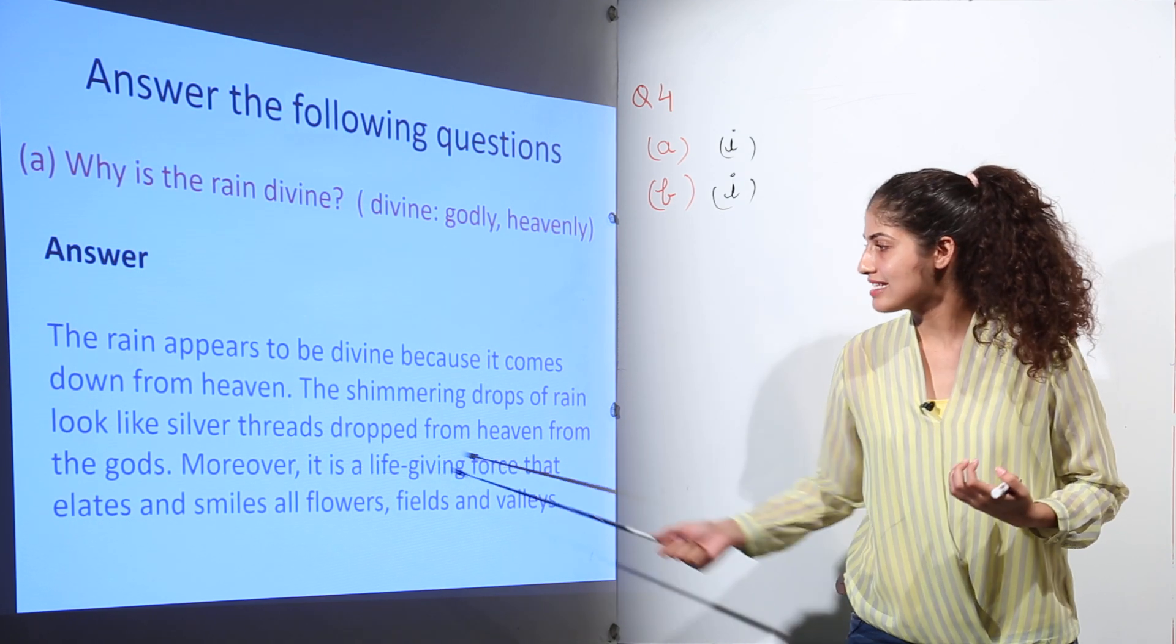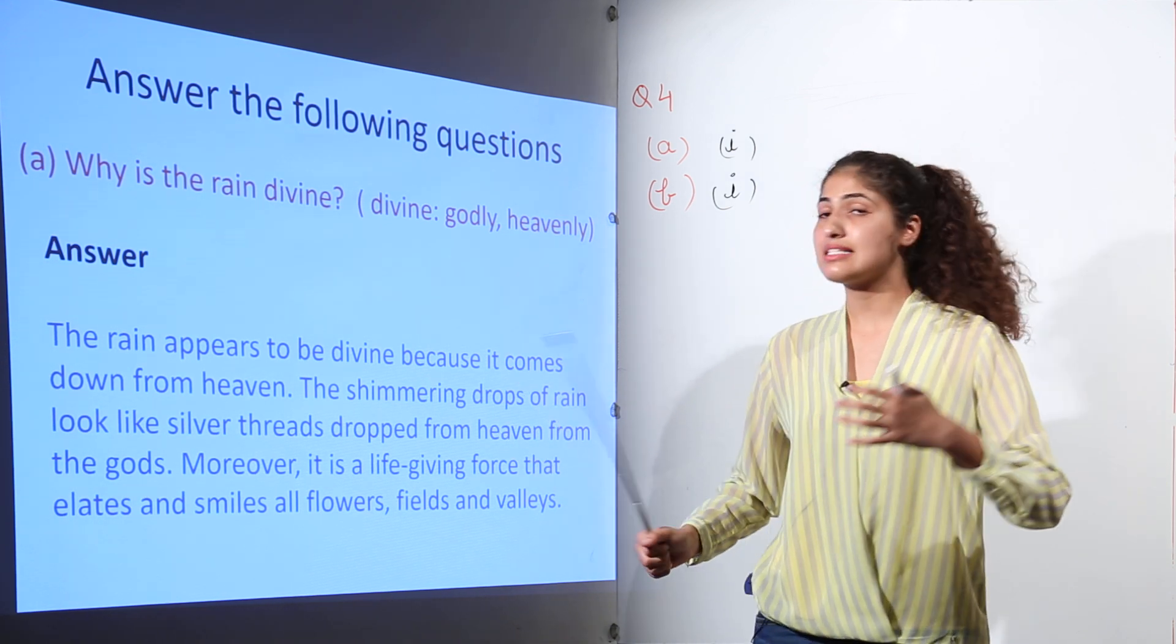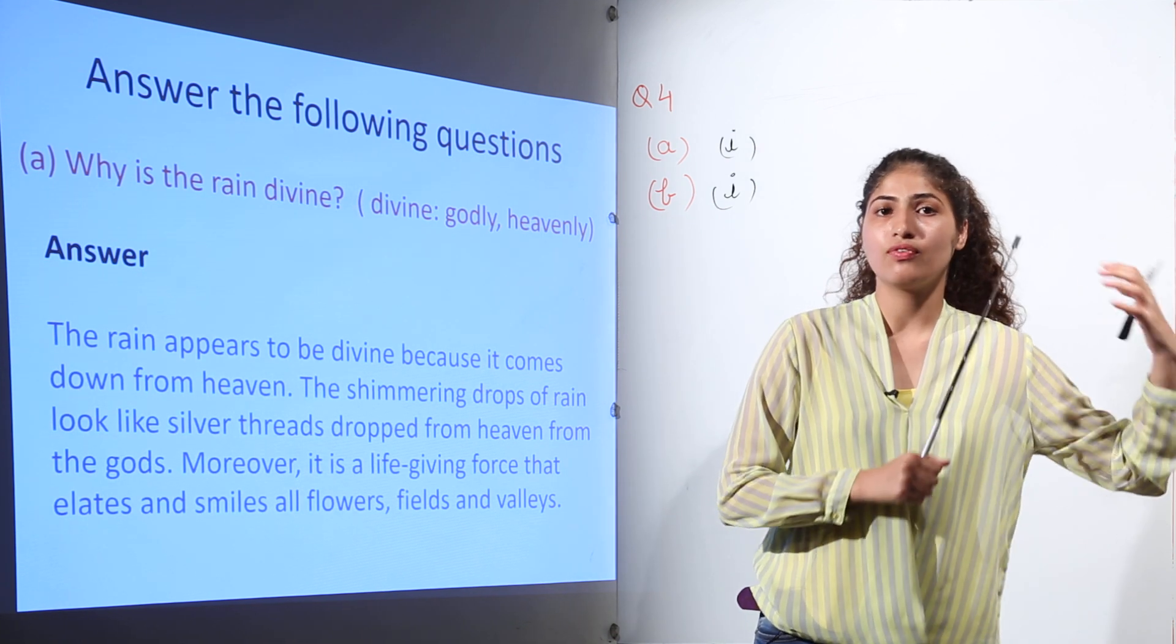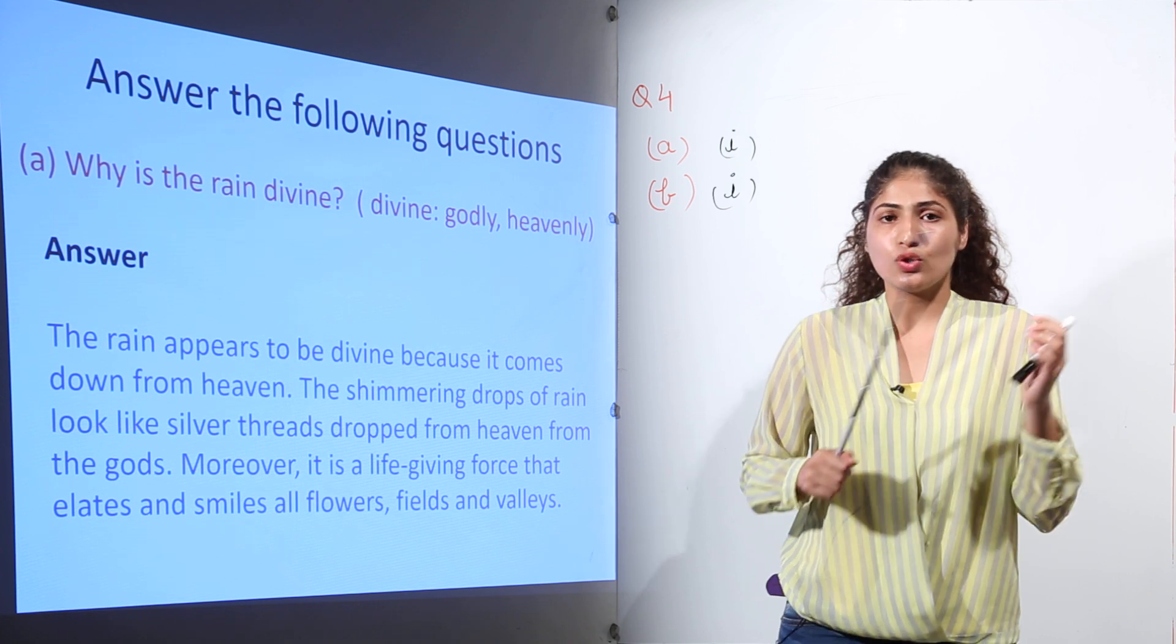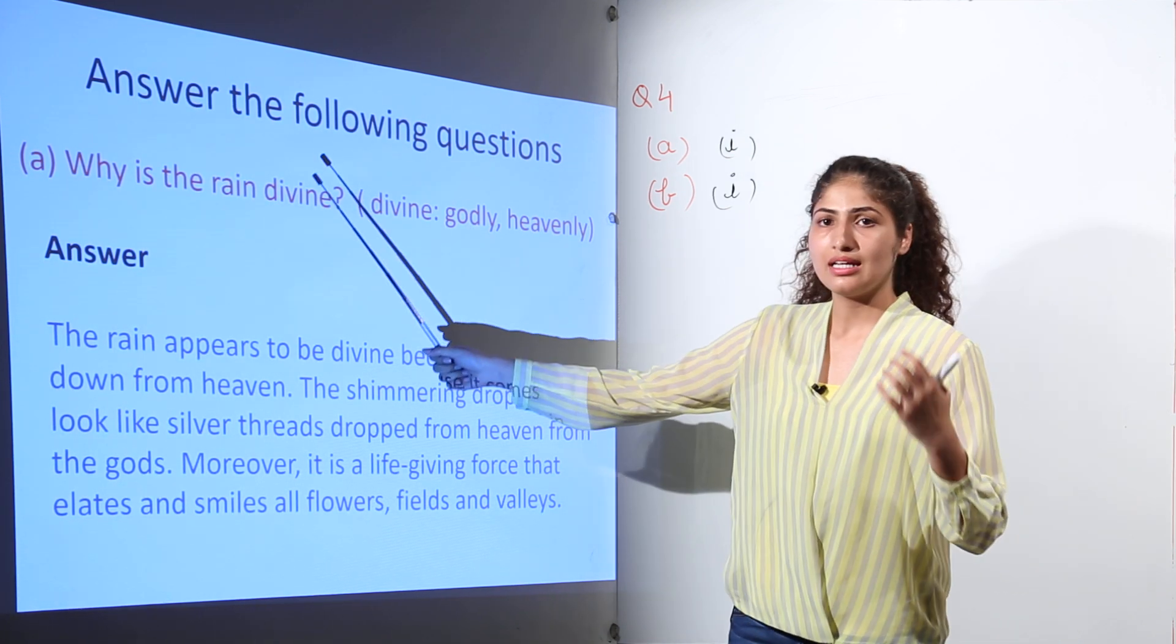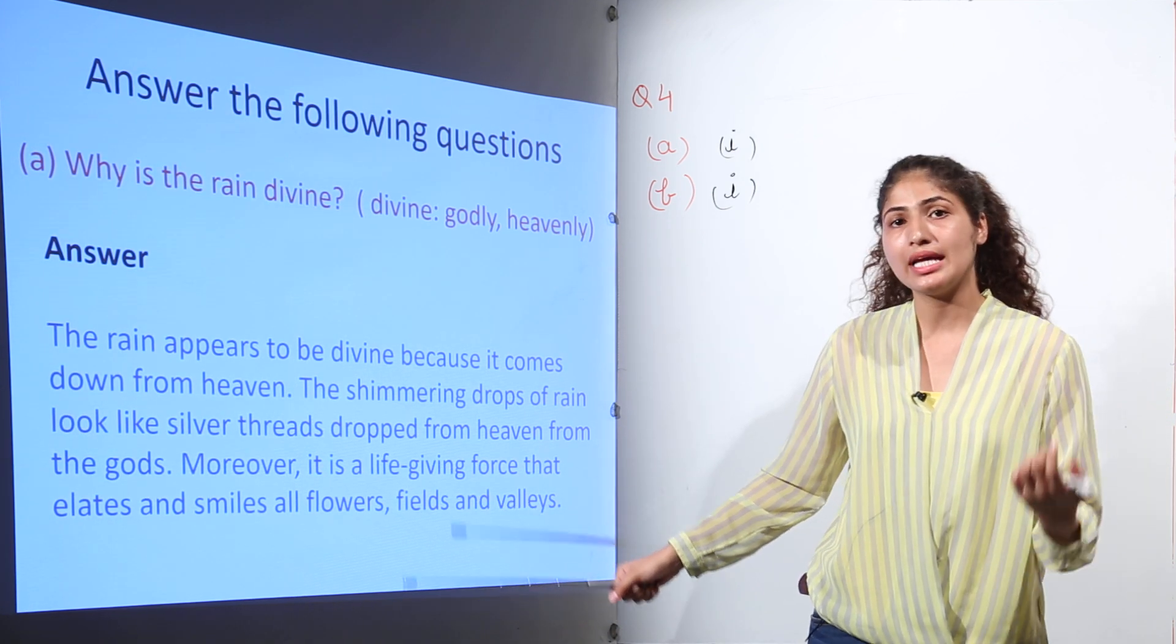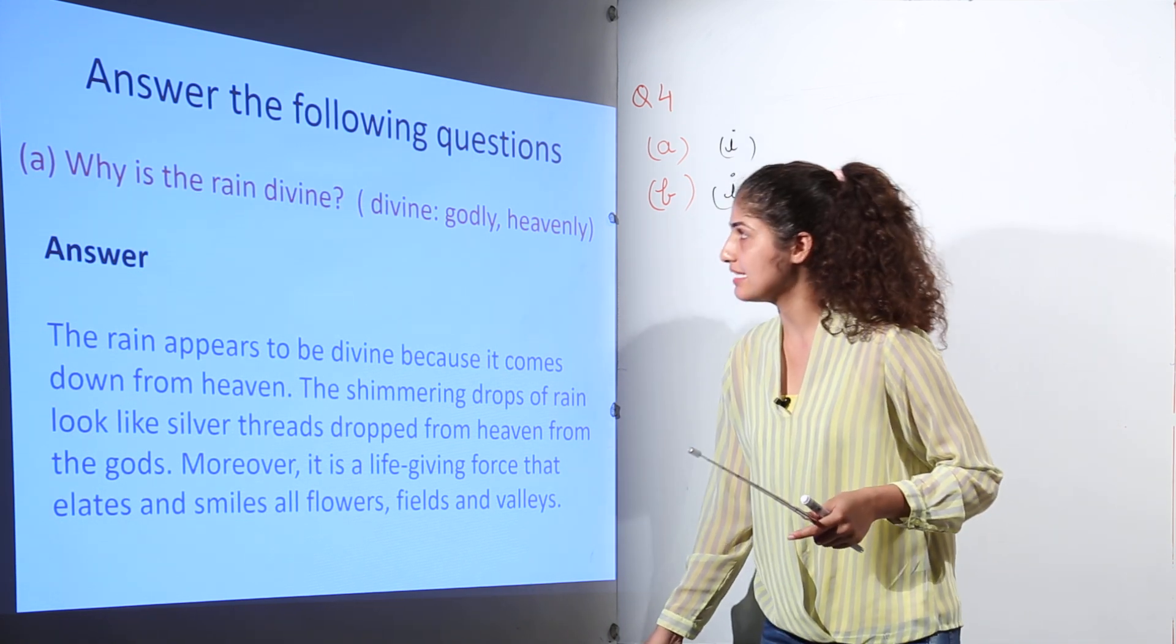So here when the trees are feeling happy, when the flowers are rejoicing, when the fields and valleys are looking beautiful, that means there is some kind of heavenly body. So here God is there behind every phenomenon. So we can say that now it is the rain who is playing the role of the God in making them happy. So we can say that rain is divine.